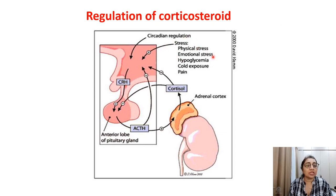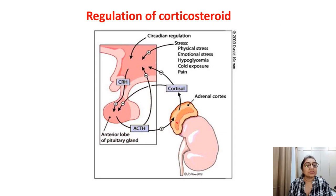Any stress — physical, emotional, hypoglycemia, cold exposure, or pain — activates the hypothalamus, which releases CRH. CRH stimulates the anterior pituitary gland to release ACTH. ACTH acts on the suprarenal gland, and the adrenal cortex releases cortisol. This is the positive pathway. In the negative feedback pathway, if corticosteroid is present in the blood, it acts on the anterior pituitary and hypothalamus to inhibit the release of CRH and ACTH, ultimately inhibiting corticosteroid release.